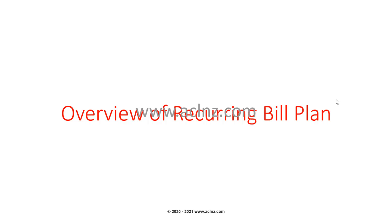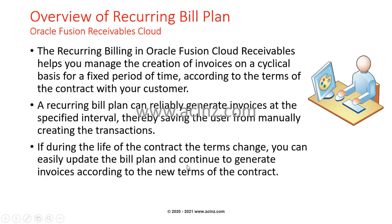An overview of recurring bill plans: by the name itself, a recurring bill plan is a sort of contract that is recurring. You can take that into multiple business scenarios. For example, you buy cloud services from Amazon — that is a classic example of a recurring bill plan. Or you can buy cloud services from a third-party provider like DigitalOcean, where a preset amount is set, say $100 a month, for buying a specific shared cloud instance.